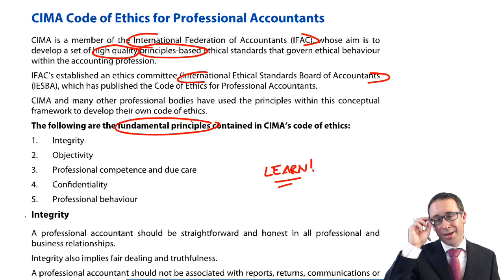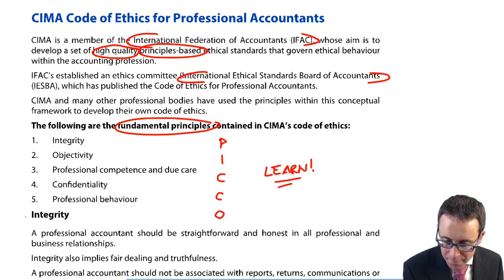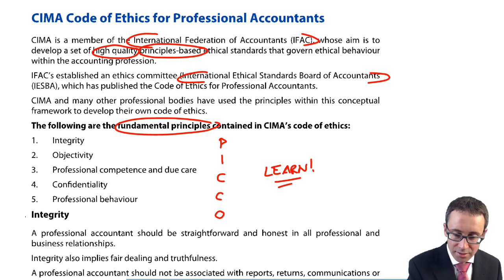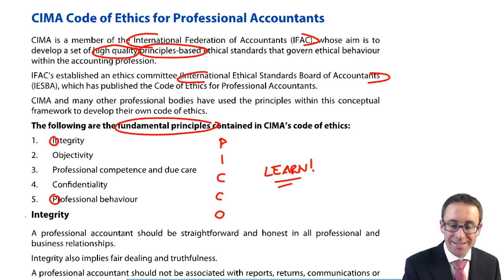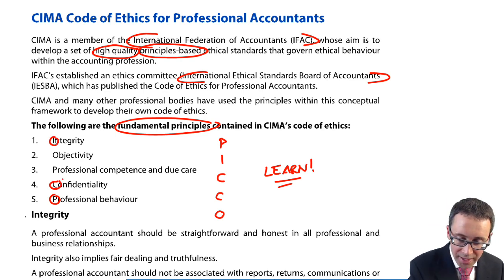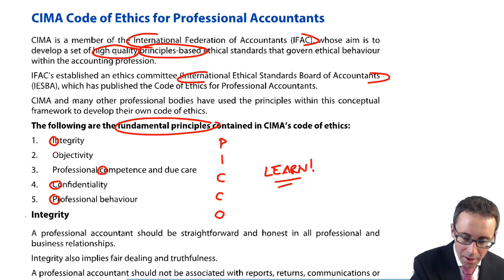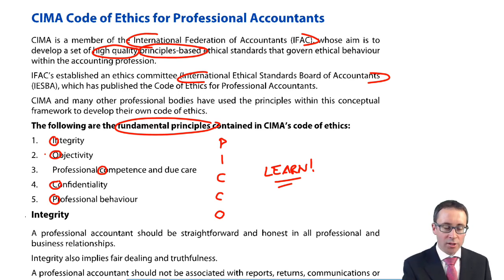In various textbooks you may see the mnemonic PICO. P stands for professional behaviour, I is integrity, C is confidentiality, the second C is competence and due care, and O is objectivity. Those won't take too long to learn — the issue is understanding what they all mean.